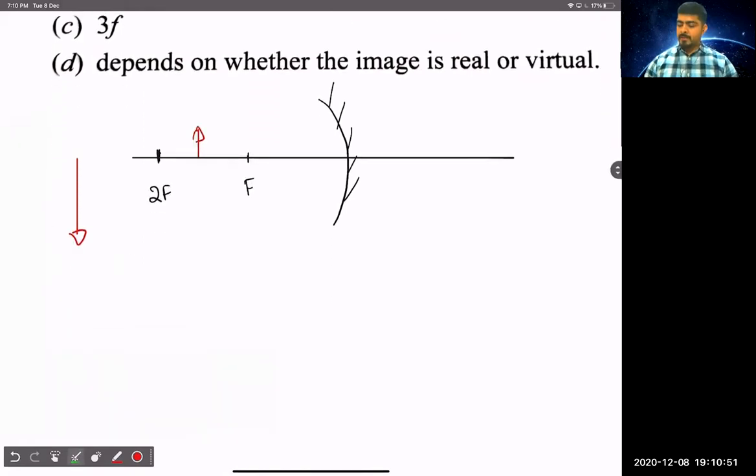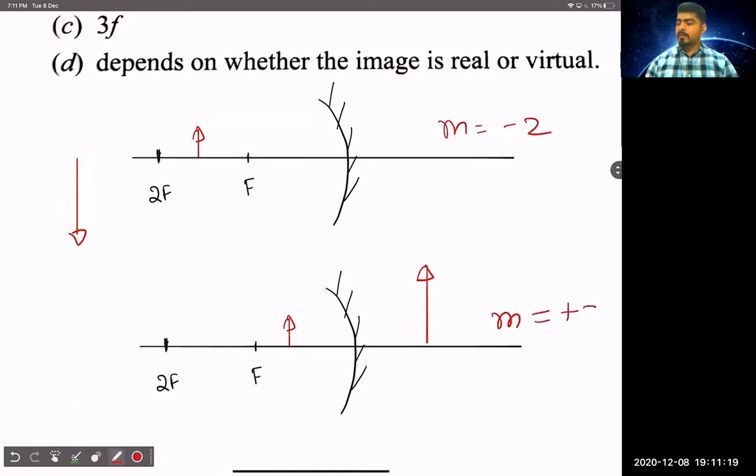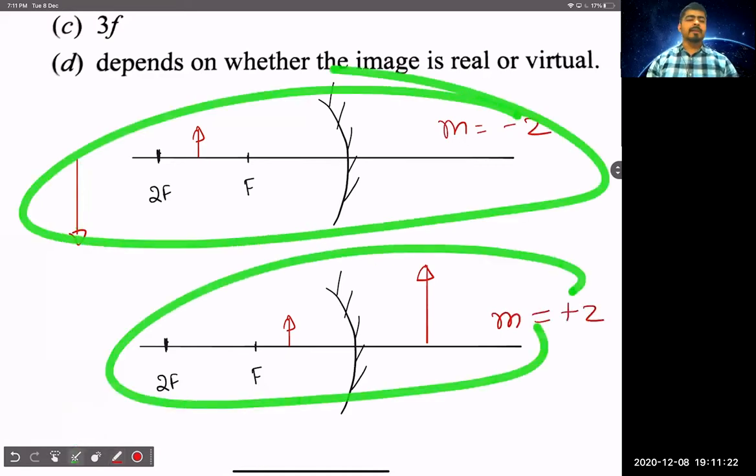Second possibility, what is this? Let's copy this. Second possibility is that my object will be here. So, the image will be larger than the object. So, here is your magnification minus 2 and here is your magnification plus 2. These two possibilities are made.